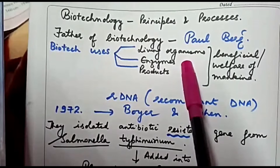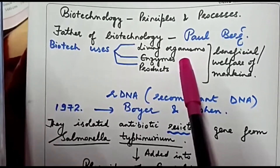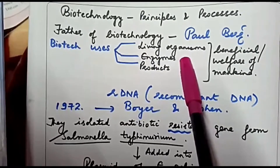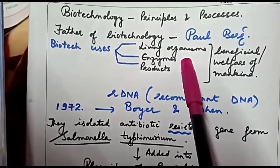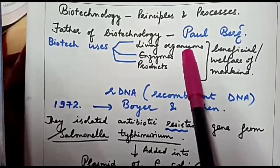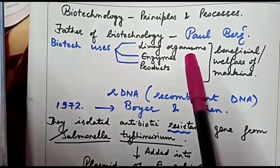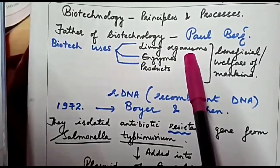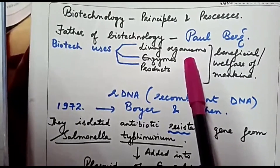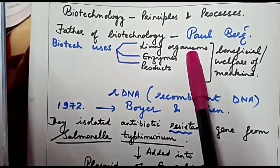People who suffer from diabetes use injections of insulin. Insulin is a hormone which is secreted by the beta cells of the Islets of Langerhans of the pancreas. People whose body cannot produce this insulin suffer from diabetes. Biotechnology has made use of genes which produce this insulin, and these genes are introduced into the body of E. coli bacteria.